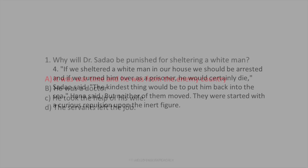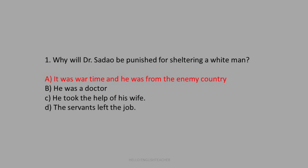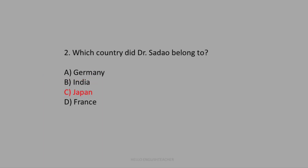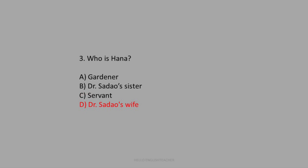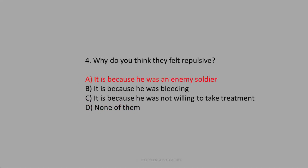Question 1: Why would Dr. Sadao be punished for sheltering a white man? It was wartime and the man was from an enemy country. Question 2: Which country did Dr. Sadao belong to? Japan. Question 3: Who is Hana? Dr. Sadao's wife. Question 4: Why did they feel repulsed looking at the white man? It was because he was an enemy soldier.